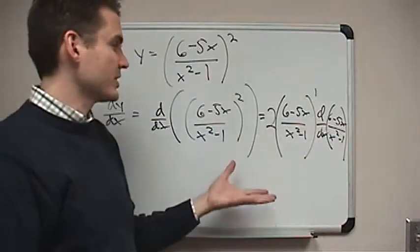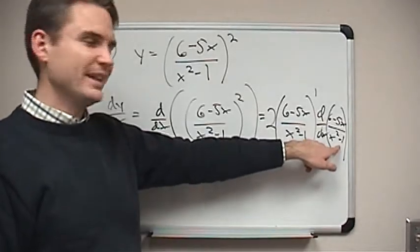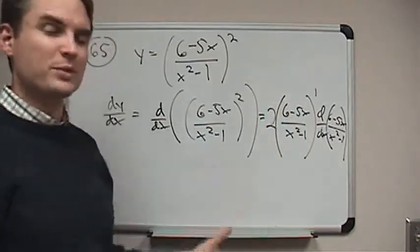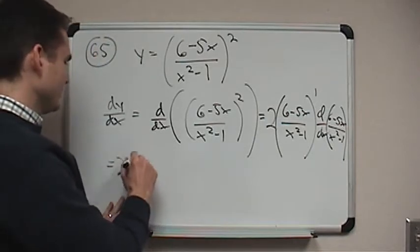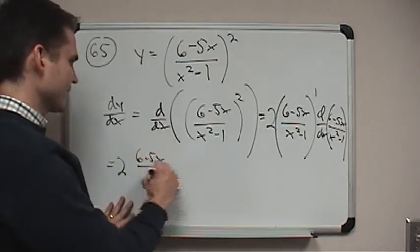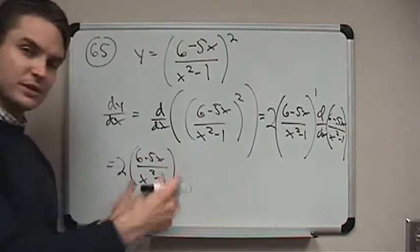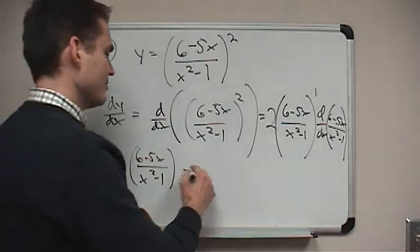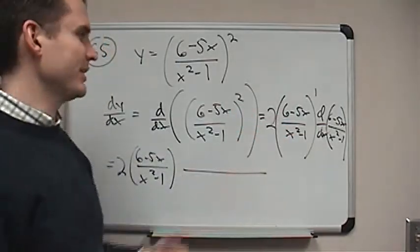So while this is just another generalized power rule problem, to get that actual derivative at the very end, I have to use another rule, which is one of our more complicated ones. Okay, but overall it's not too bad. We've got 2 times 6 minus 5x over x squared minus 1 to the power 1, so I'm just going to leave it as it is. Okay, but then I have to multiply it by the derivative of this, which to get that we need the quotient rule.